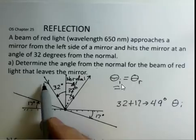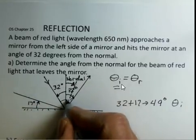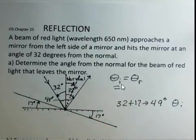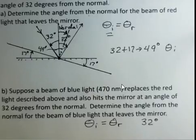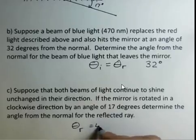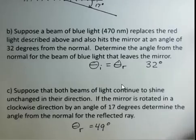This incoming beam of light is now 49 degrees away from the normal for this rotated mirror. It's 49 degrees so theta i equals theta r. The reflected angle is going to be 49 degrees away from the normal.